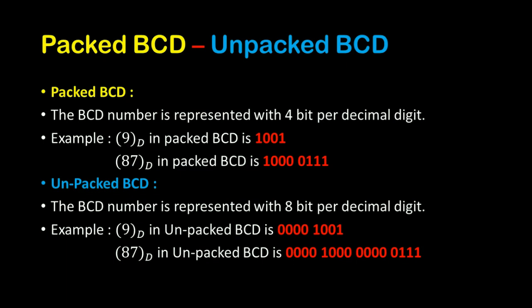For example, if you want to represent the decimal digit 9 in Unpacked BCD form, then it is represented in 8-bit form — that is 0, 9. So for 0, it is given as 0000, and for 9 it is given as 1001.